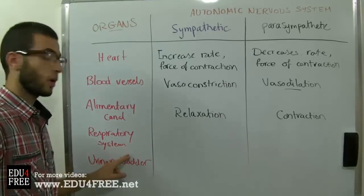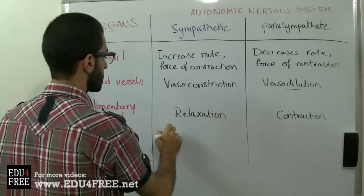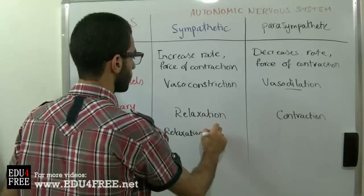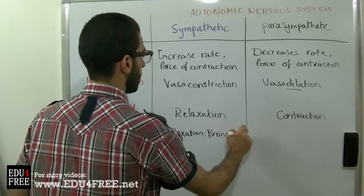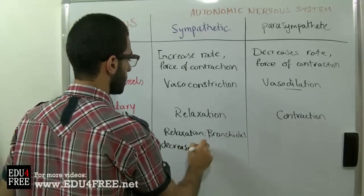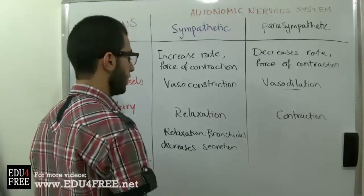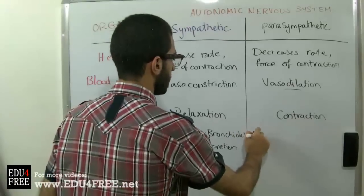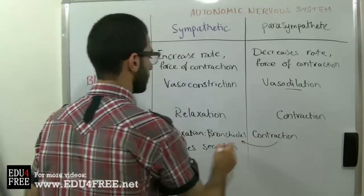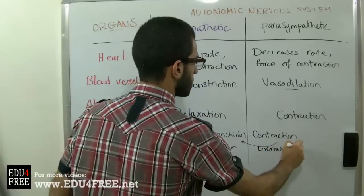Regarding the respiratory system, the effect of the Sympathetic Nervous System is the relaxation of bronchioles and a decrease in secretion. The Parasympathetic Nervous System has the opposite effect — contraction of bronchioles and an increase in secretion.